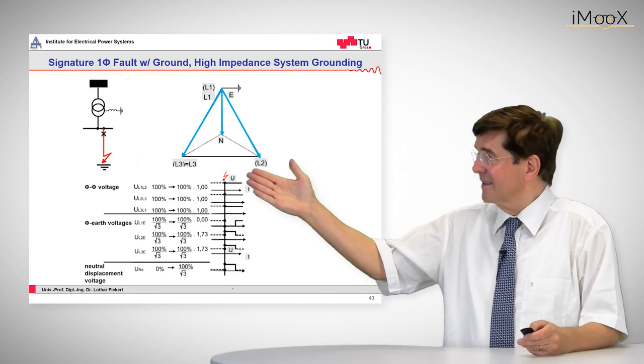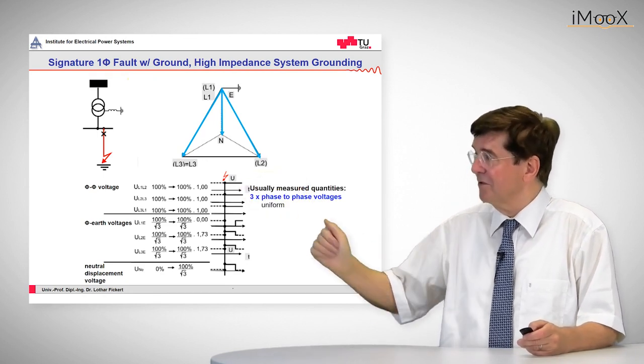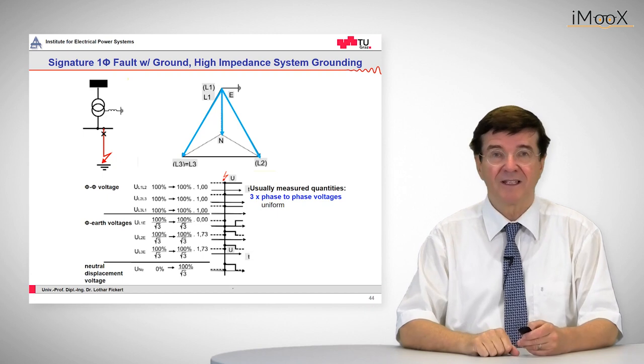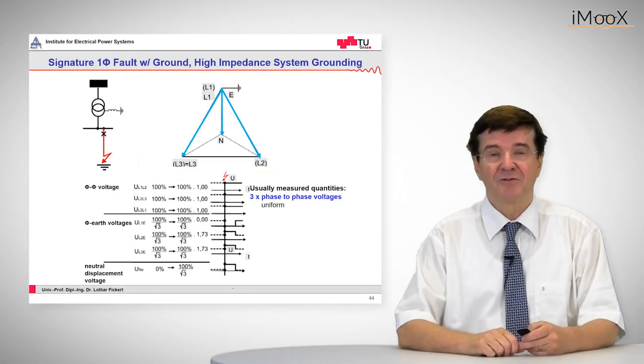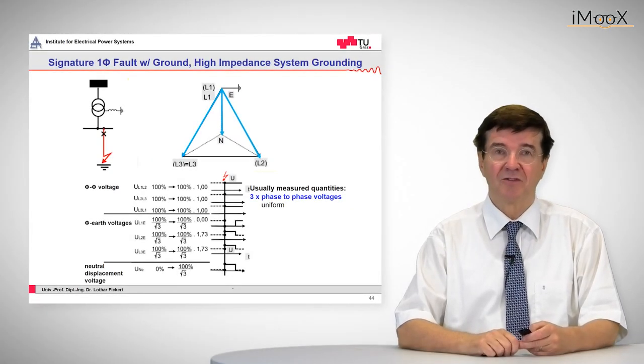Here we can see this in the traces. First, the phase-to-phase voltages are uniform, they do not change and this is the reason why operation of the loads is not severely afflicted by such a fault.